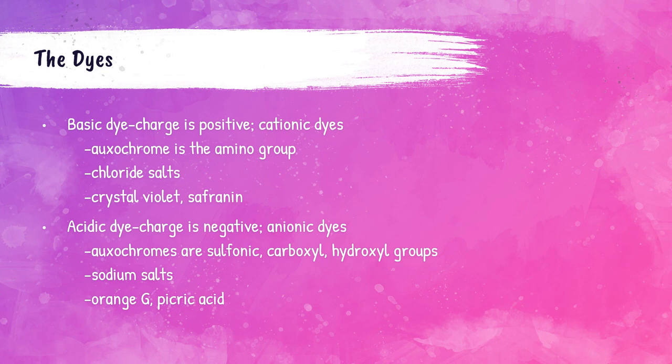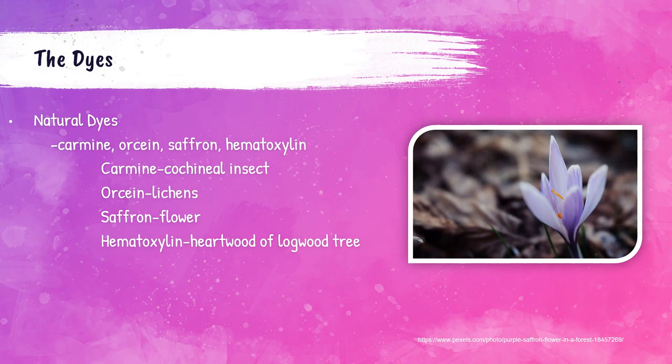A confusing concept: when referring to dyes, pH has nothing to do with the terms 'basic dyes' and 'acidic dyes.' Basic dyes have a positive charge and are also called cationic dyes; the basic oxochrome group is the amino group, and most are chloride salts — crystal violet and safranin are examples. Acidic dyes have a negative charge and are called anionic dyes; their oxochromes are sulfonic, carboxyl, and hydroxyl groups, most are sodium salts, and orange G and picric acid are examples.